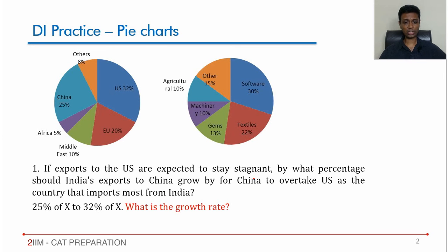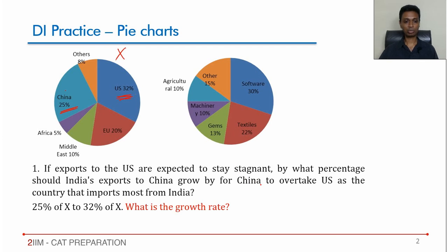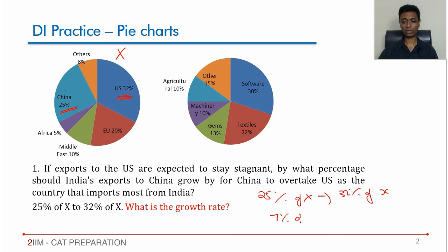If exports to the US are expected to stay stagnant, by what percentage should India's exports to China grow for China to overtake the US as the country that imports most from India? US is 32% of X, China is 25% of X. China needs to grow from 25% of X to 32% of X — a growth of 7% of X on a base of 25% of X. That gives 7/25 × 100 = 28%.